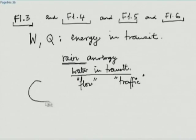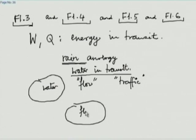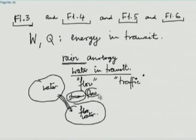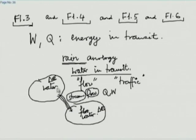Continuing the analogy: when two tanks of water are connected, there is a flow or stream — that is something similar to Q and W. Water here is like energy: the level going down is equivalent to delta-E being negative, level going up is positive. But you don't say the tank contains so much flow — only when it moves do you call it flow. Similarly, W and Q only exist in transit.